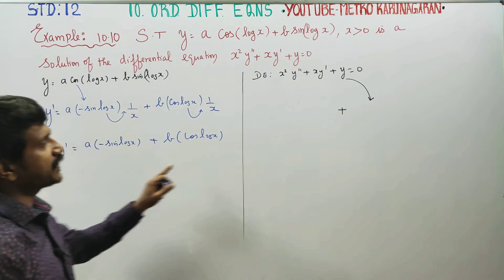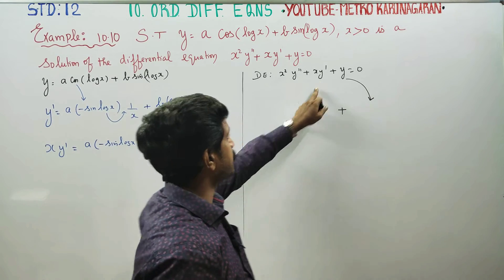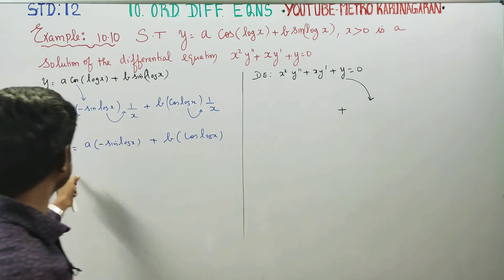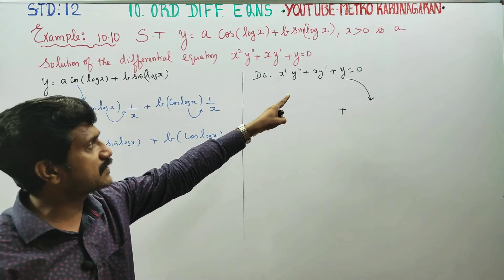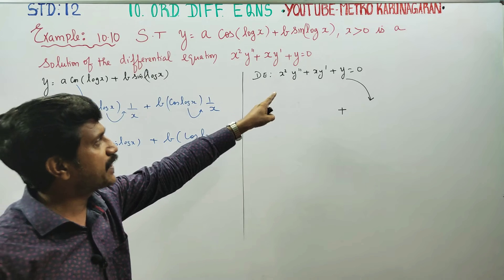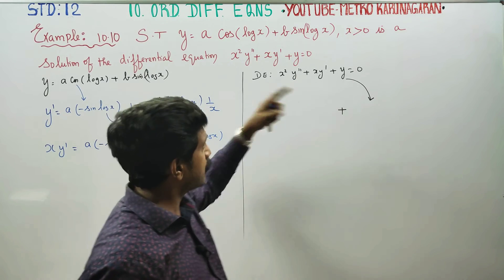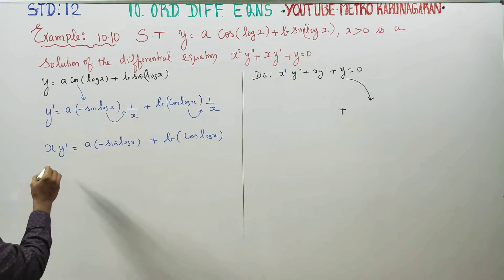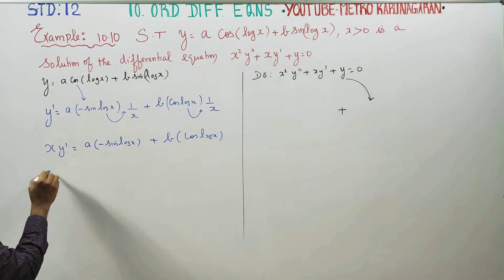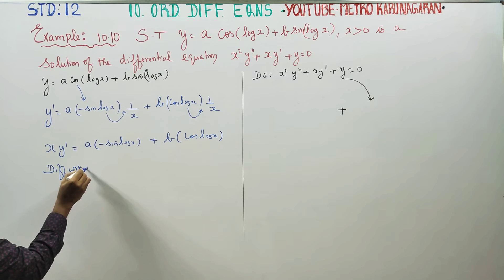Now, x·y' is substituted for all of x. Then y'' is obtained by differentiating once more with respect to x, giving 1/x terms from the chain rule.